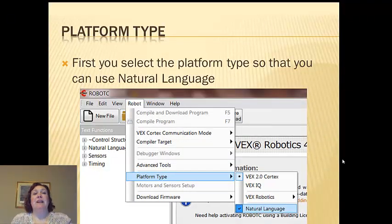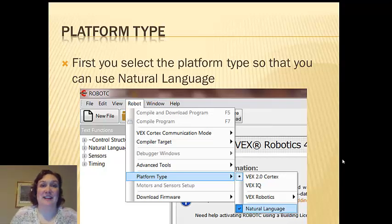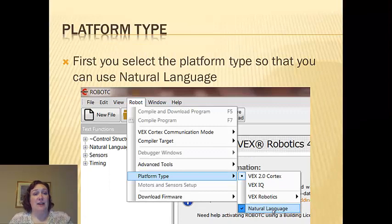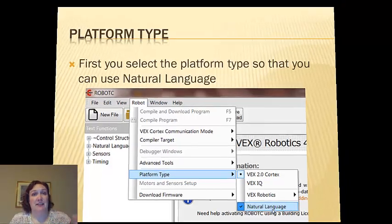So the very first thing you have to do is you have to set your platform type. And people often forget to do this. And then if you forget to set your platform type, you're going to end up with some interesting problems because none of your natural language will show up on the left hand side of your screen for you to be able to drag and drop or do any code. So the first thing to always check is go to robot, pull down to platform type over and make sure that VEX 2.0 Cortex is selected and then natural language. And that's going to set up your natural language platform, which allows you to do all of the fancy little drag and drop things that we do.